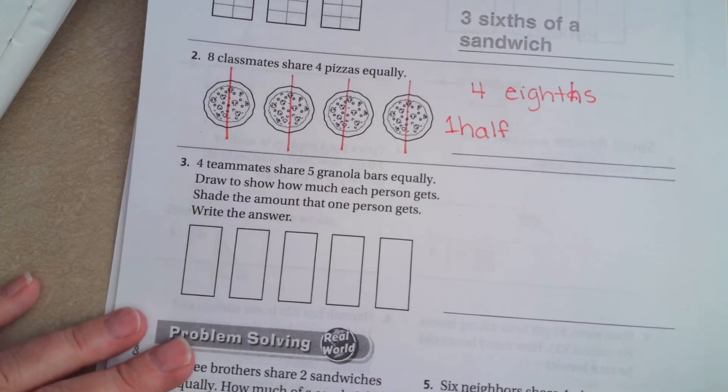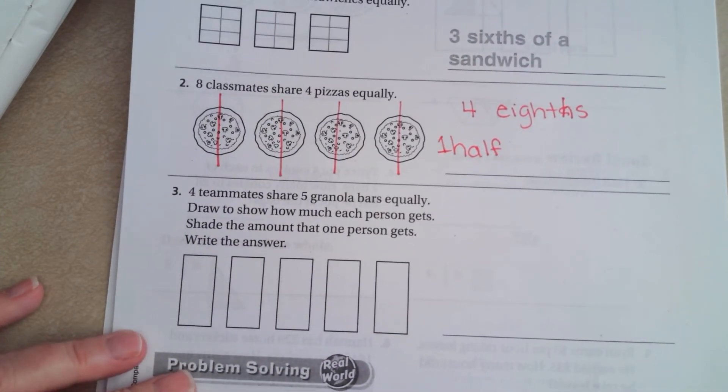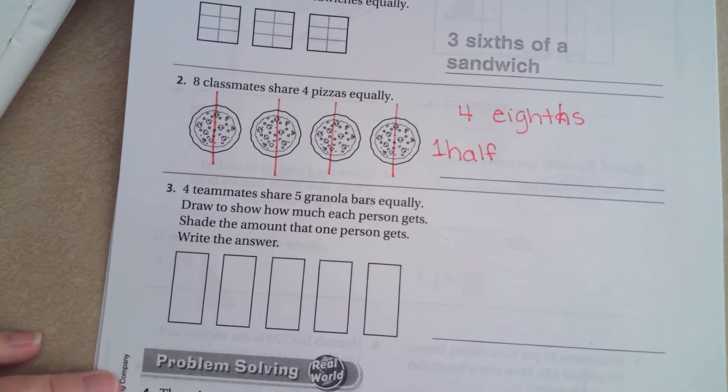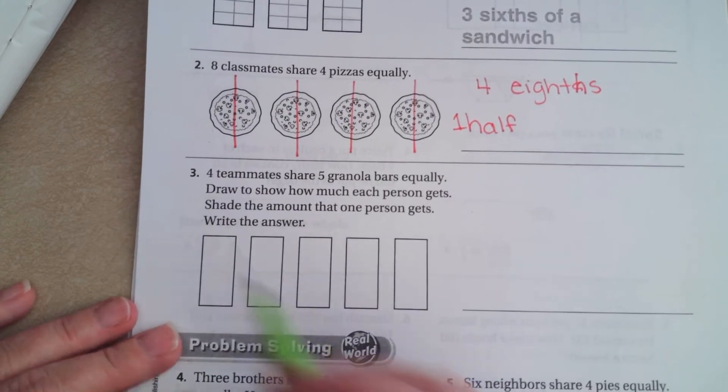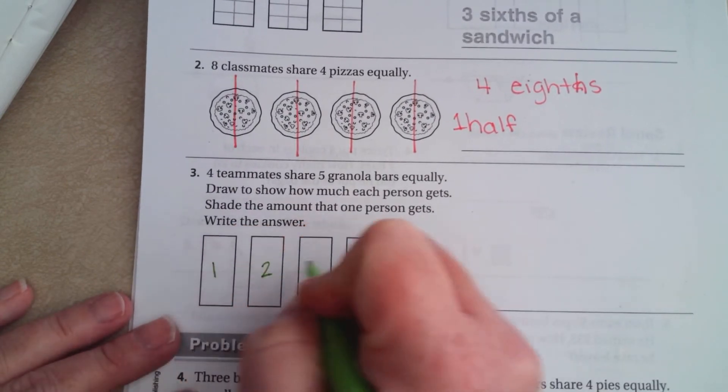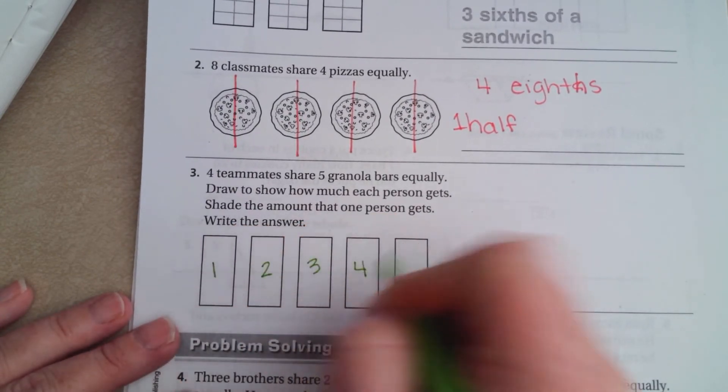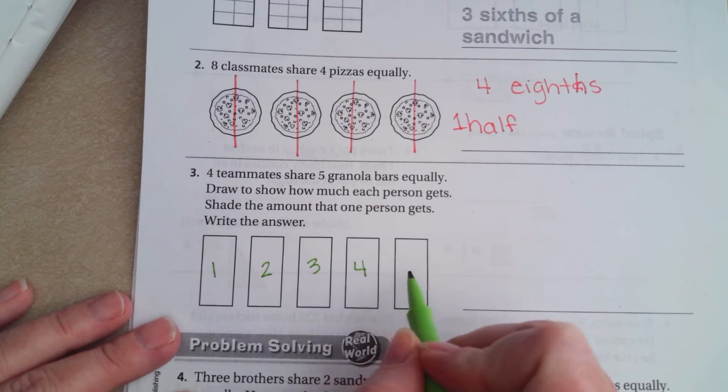Alright, 4 teammates share 5 granola bars. So, we need to split each one of these into 4, or we can just say here's 1, 2, 3, 4, and then split the last one into 4.